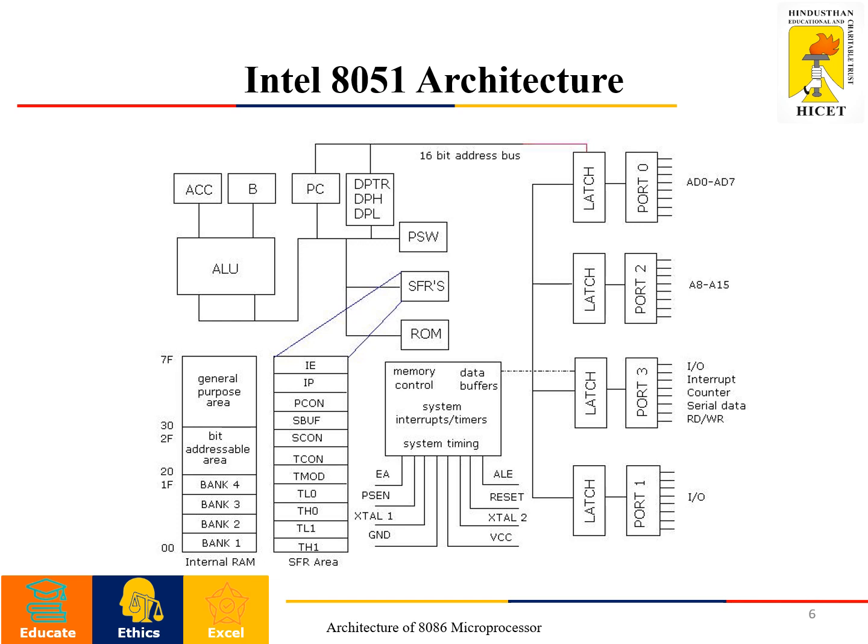The 8051 has a 16-bit address as discussed. The ports available are Port 0, Port 1, Port 2, and Port 3. These ports are connected through latches. About the timing control block: ALE, signal reset, XTAL1, VCC, and ground — all the functional pins are available in this block.